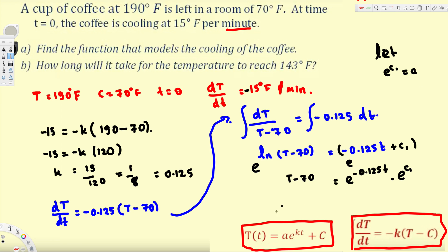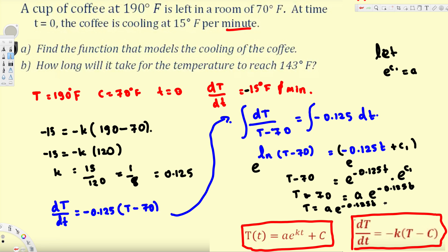We are almost reaching the standard pattern. Substituting, we get T - 70 = A·e^(-0.125t), so T = A·e^(-0.125t) + 70. Now we still need to figure out the value of A in order to give the final function model.